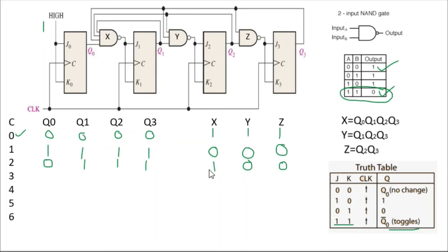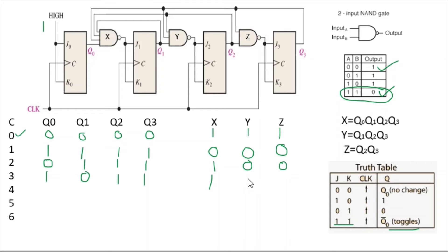Before the third clock: X=1, Y=0, Z=0. J0K0=1 so q0 toggles (0→1). J1K1=X=1 so q1 toggles (1→0). J2K2=Y=0 and J3K3=Z=0, so q2 and q3 do not toggle. After the third clock: q0=1, q1=0, q2=1, q3=1. Now X remains 1. Y has q1=0, q2=1, q3=1 — one input is zero, so Y=1. Z has q2=1, q3=1 — all one, so Z=0.